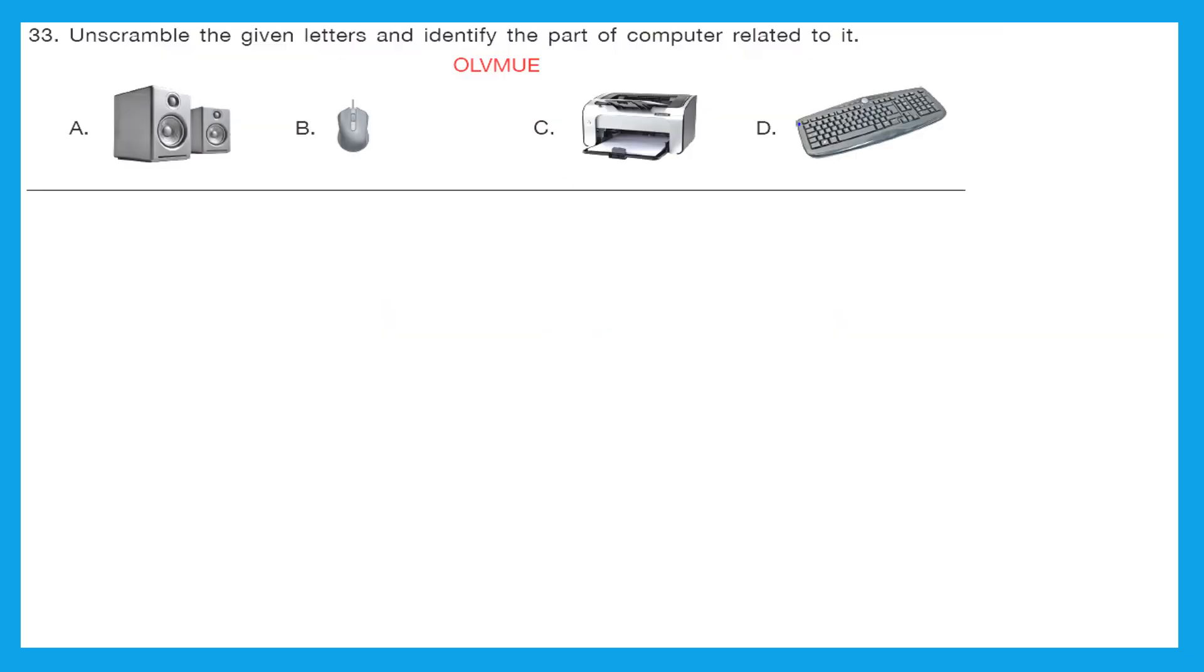Question 33: Unscramble the given letters and identify the part of computer related to it. So let's first do the unscrambling and we will get volume from these letters. Now which part is related to volume? Is it speakers, mouse, printer or keyboard? The right answer is option A. Speakers.